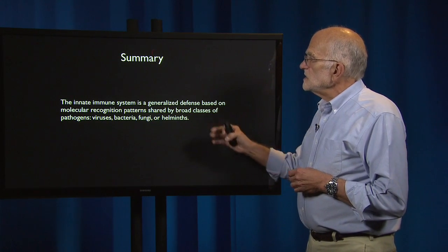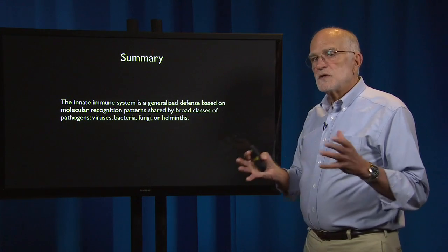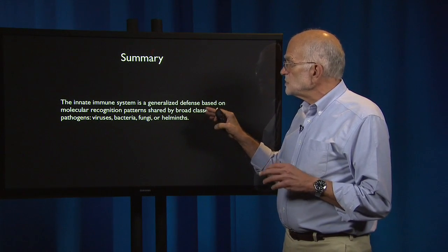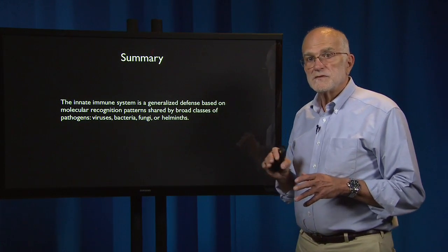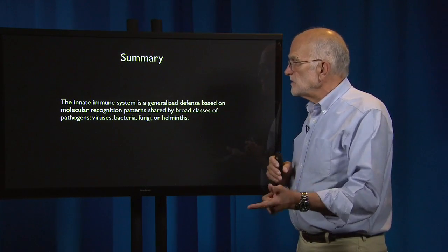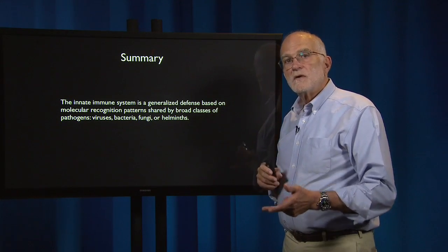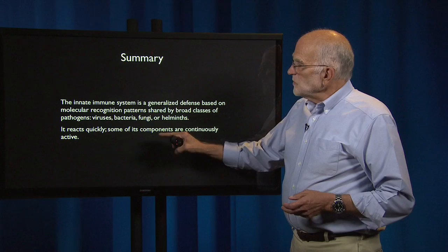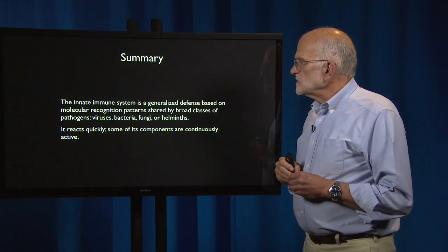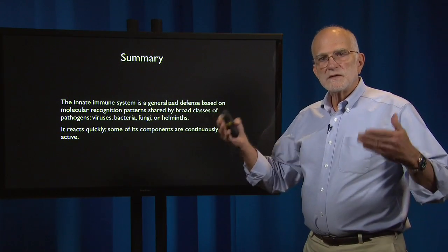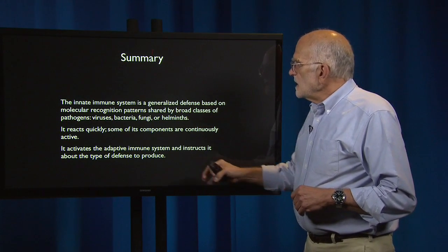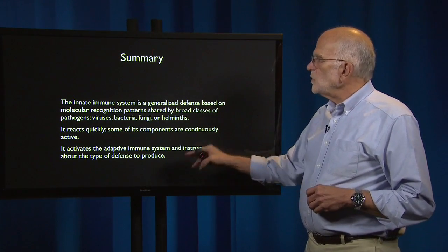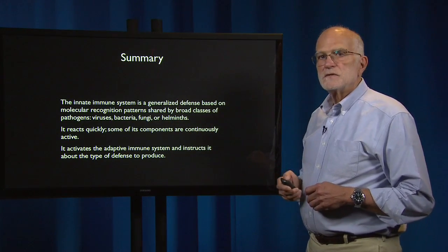To summarize, the innate immune system is a generalized and ancient immune system based on molecular recognition patterns shared by broad classes of pathogens — is it a virus, a bacterium, a fungus, or a worm? This system reacts quickly; some of its components, like complement, are actually continuously active. It activates the adaptive immune system and instructs it about which kind of defense to produce.